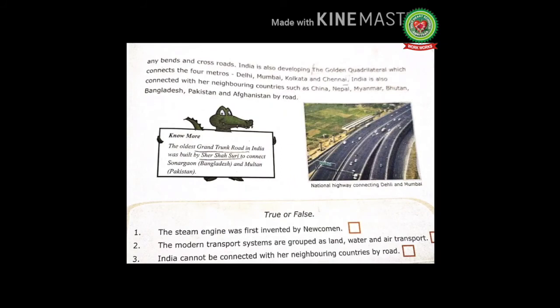You all have to solve the true/false exercise on page number 89. First: the steam engine was first invented by Newcomen. Second: the modern transport systems are grouped as land, water, and air transport. Third: India cannot be connected with her neighbouring countries by road.